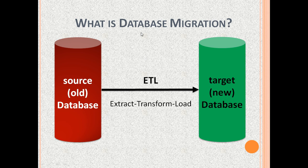First, what is database migration? It means the movement of data from an old database or databases to a new database. We refer to the old database as a source database or legacy database. We call the new database the target database or the destination database. We use an automated ETL — meaning extract, transform and load — process to do the DB migration. The ETL tool also has business rules to increase data quality.